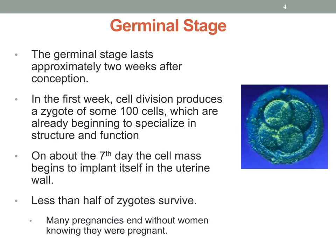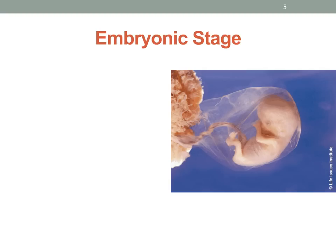This germinal stage lasts approximately two weeks after conception. In the very first week, cell division produces a zygote of some 100 cells which are already beginning to specialize in their structure and function. On about the seventh day, the cell mass begins to implant itself into the mother's uterine wall. We think that about less than half of all zygotes survive. Many pregnancies end without women ever knowing they were pregnant, as this is a very sensitive and critical time of development and unknown miscarriages are quite common.